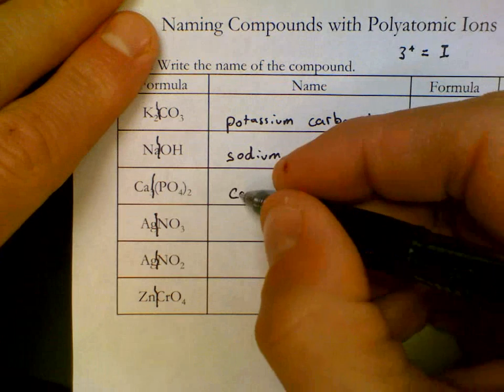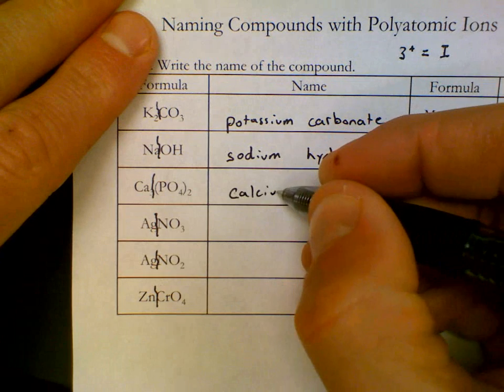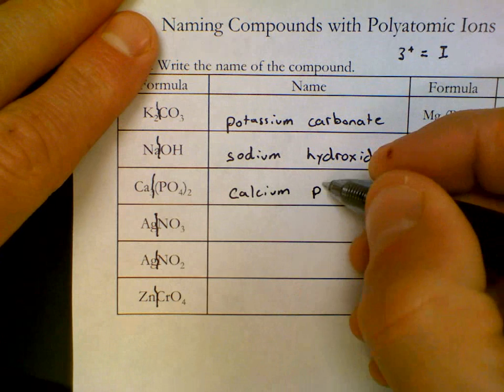Ca is called calcium. PO₄ is called phosphate.